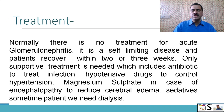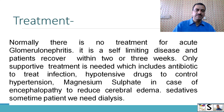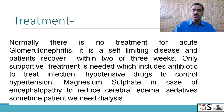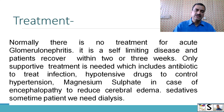Treatment: normally there is no specific treatment for acute glomerulonephritis, as it is a self-limiting disease and the patient recovers within 2 to 3 weeks. Only supportive treatment is needed, which includes antibiotics to treat infection, hypotensive drugs to control hypertension, magnesium sulphate in case of encephalopathy to reduce cerebral edema, sedatives, and sometimes dialysis.